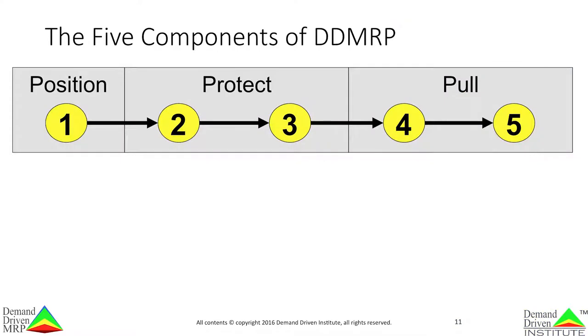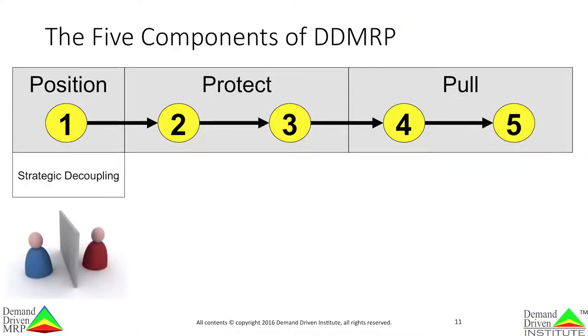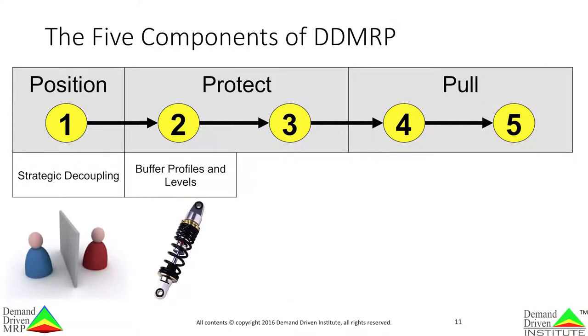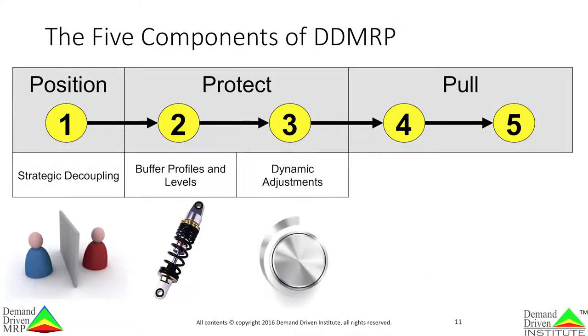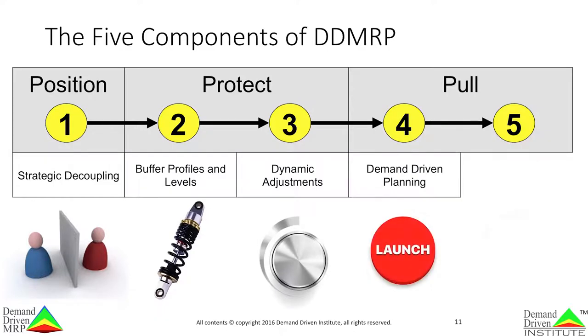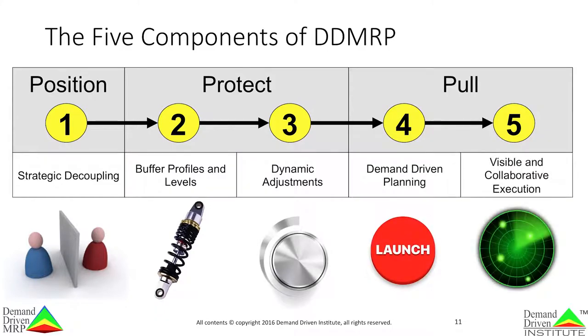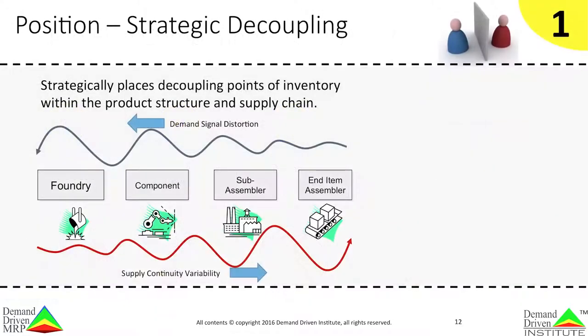DDMRP has five sequential components: strategic decoupling, buffer profiles and levels, dynamic adjustments, demand-driven planning, and finally, visible and collaborative execution. Let's look at each one of these components in more detail.